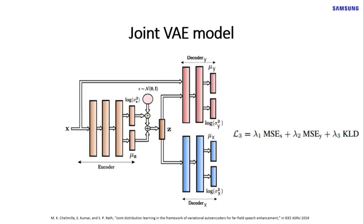In the architecture, as you can see, the input to the encoder is SI features, which is filterbank in our case. In the lower decoder, the same filterbank features are predicted. In the upper decoder, time-aligned FMLLR-normalized features are predicted.